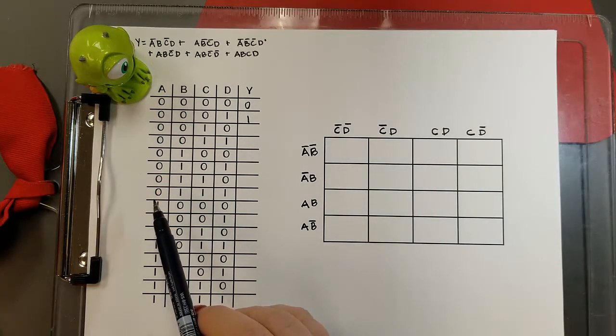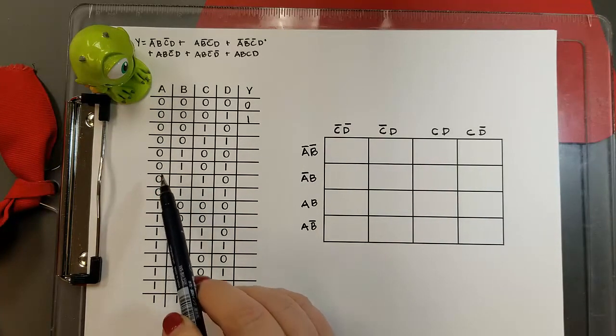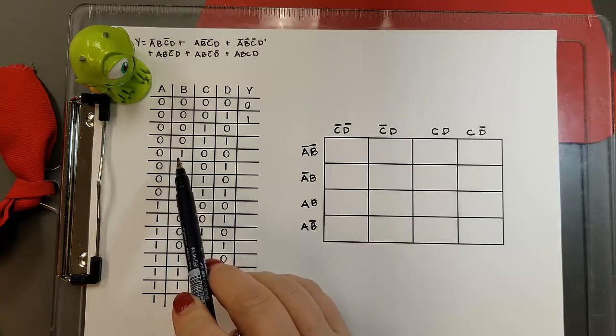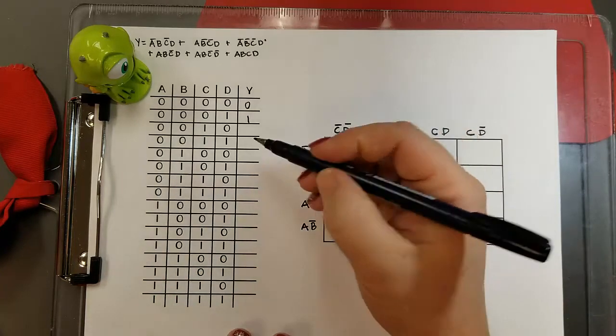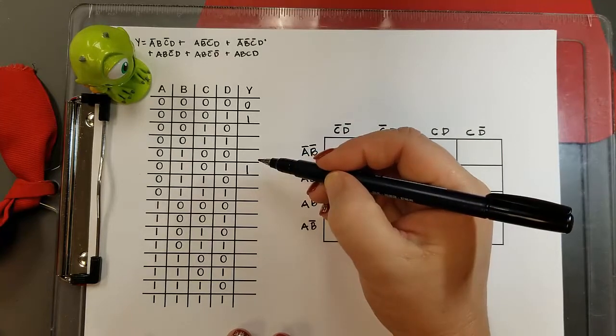But now I'm going to find not A, B, not C, D. So that'll be A equals 0, B equals 1, C equals 0, D equals 1.